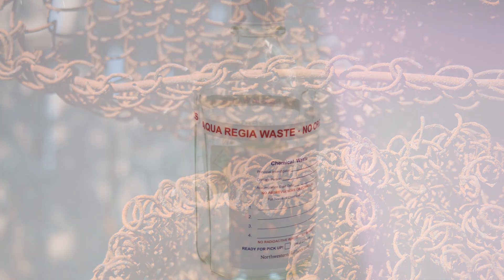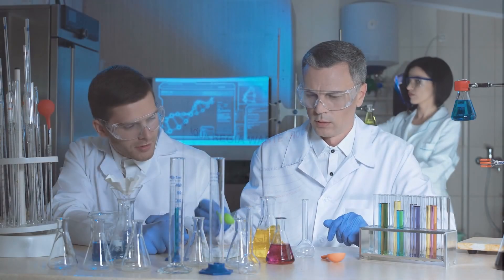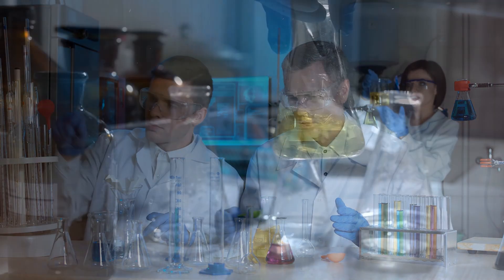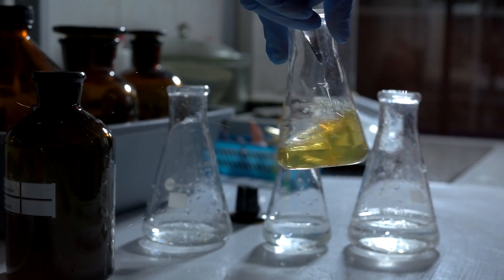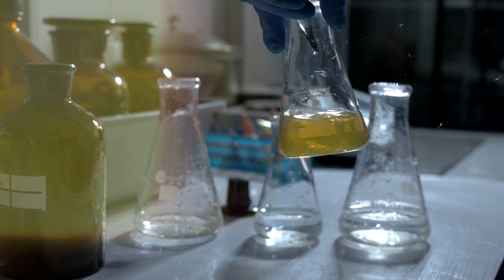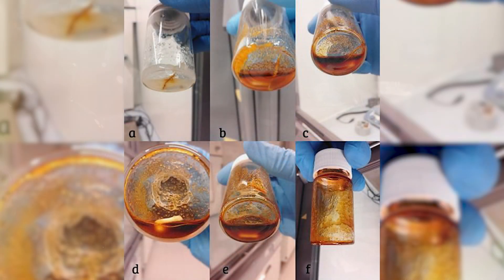The next destructive acid is aqua regia, which is a highly corrosive mixture of hydrochloric acid and nitric acid in a three to one ratio. It can dissolve even noble metals such as gold and platinum, as well as corrode steel. The aggressive nature of aqua regia makes it particularly destructive.